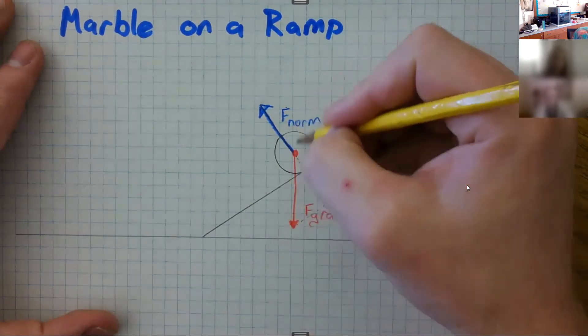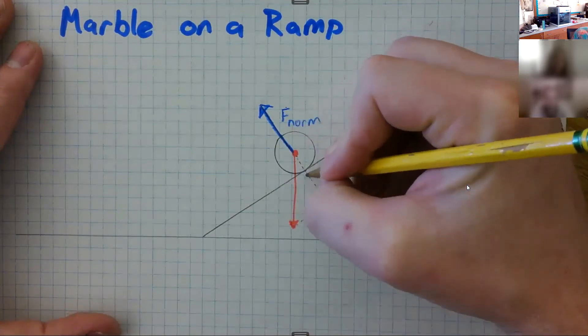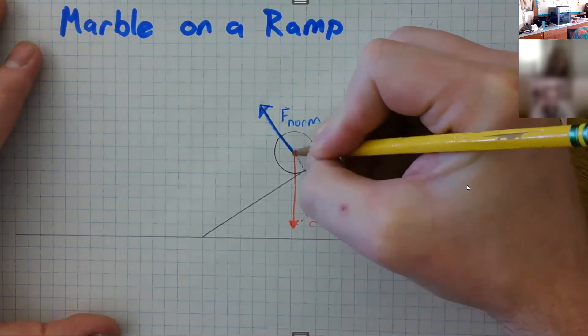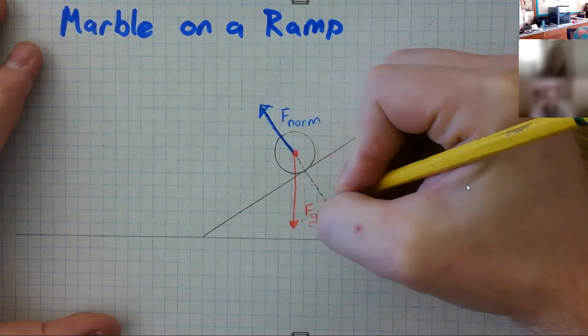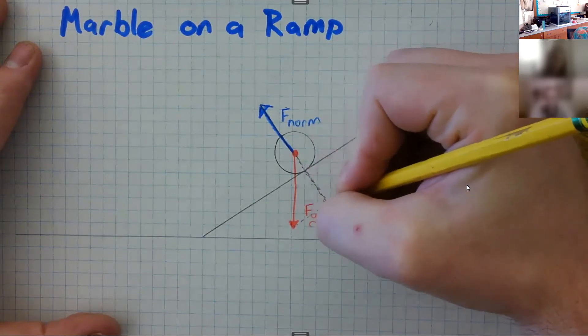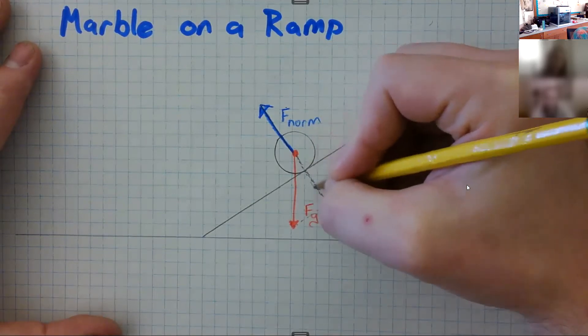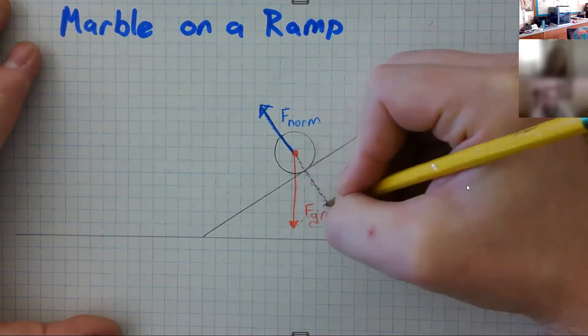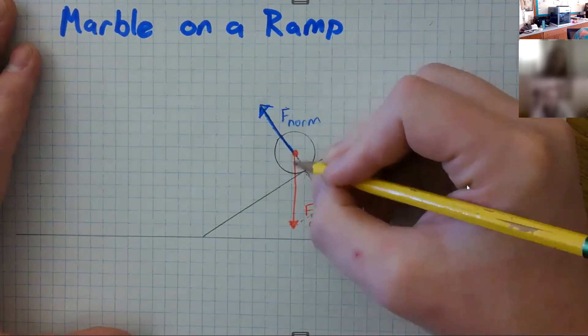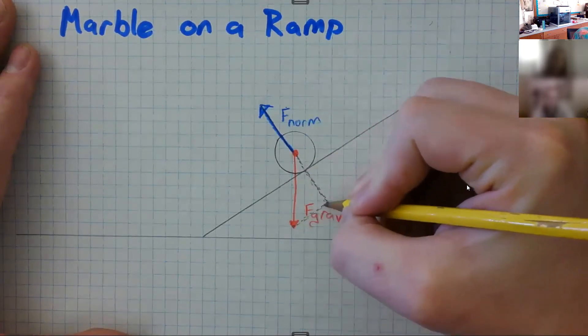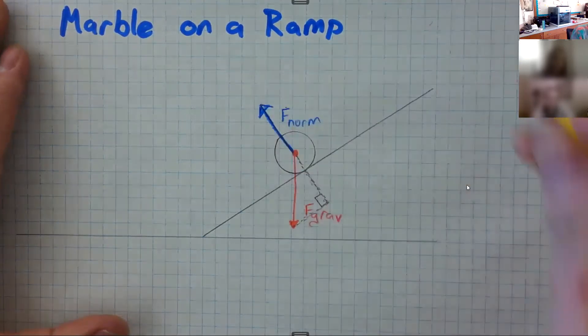And we know that gravity is making this marble push back against the ramp with this much force, and so we know the normal force is equal to that side of that triangle we just made. And that's what I was just measuring, how much force the normal force is, and so it's pushing back the opposite direction. So we have gravity, we have the normal force.